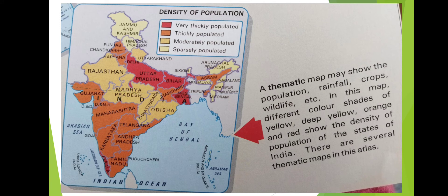The third one is thematic maps. The thematic map may show the population, rainfall, crops, wildlife, etc. In this map, different color shades are represented — like yellow, deep yellow, orange and red — to show the density of population of the states of India. For example, red represents very thickly populated areas, orange represents thickly populated areas, light yellow represents moderately populated, and yellow represents sparsely populated areas. These are the key features in the map.